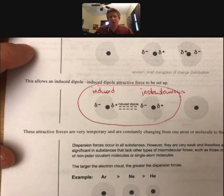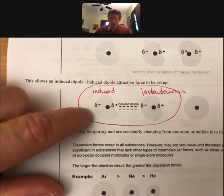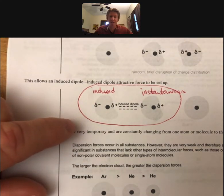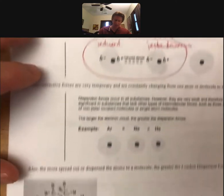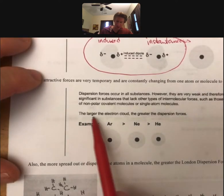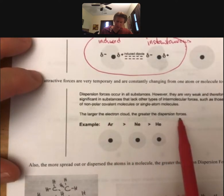That we look for what's called the dominant intermolecular force. The only molecules that have dispersion forces as their dominant intermolecular force are nonpolar molecules because it's their only intermolecular force. If something has dipole-dipole and dispersion, dipole-dipole is dominant. And the larger the electron cloud, the greater the dispersion force.